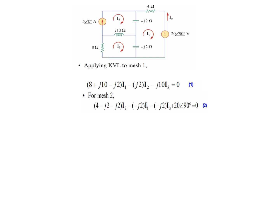For mesh 2, writing all terms related to I2: (-j2 - j2 + 4)*I2. Then subtracting terms due to other currents: minus j2*I1, and minus j2*I3. Finally, we also write the voltage source term in this equation.